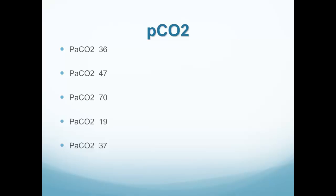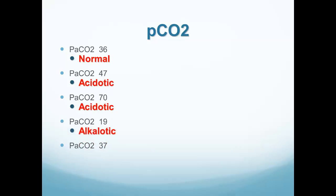Now let's look at some CO2 values. A PaCO2 of 36 is normal — within 35 to 45. A PaCO2 of 47 is acidotic. A CO2 of 70 is also acidotic. A CO2 of 19 is alkalotic — remember, it's opposite, low CO2 means alkalosis. And a PaCO2 of 37 is normal.